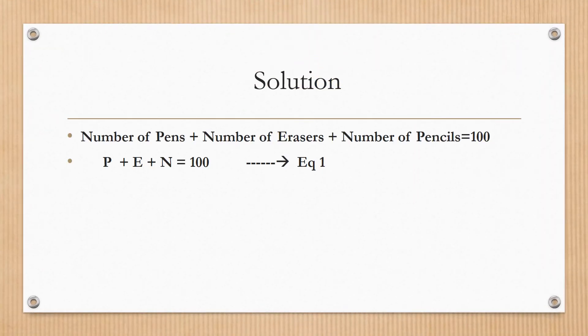First equation: number of pens P plus number of erasers E plus number of pencils N equals 100.